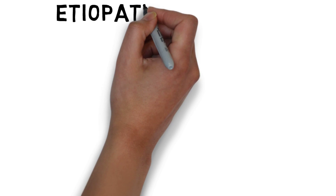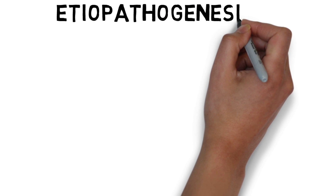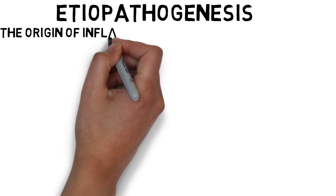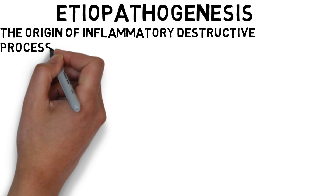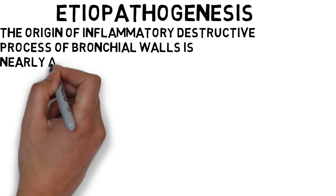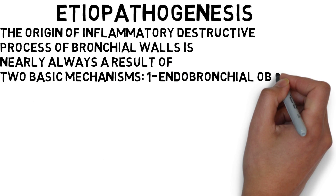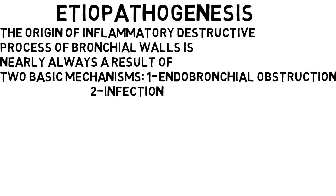The aetiopathology of bronchiectasis: the origin of the inflammatory destructive process of the bronchial wall is nearly always a result of two basic mechanisms — endobronchial obstruction and infection. Endobronchial obstruction by a foreign body, neoplastic growth or enlarged lymph nodes causes reabsorption of air distal to the obstruction with consequent atelectasis and retention of secretions.